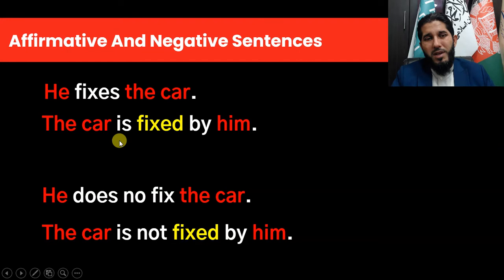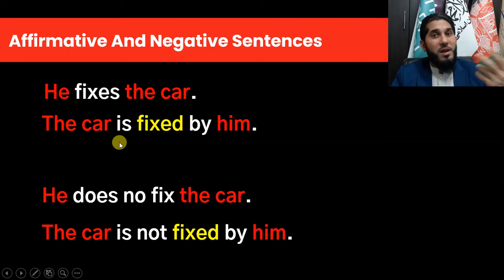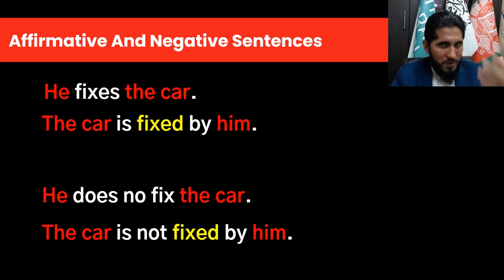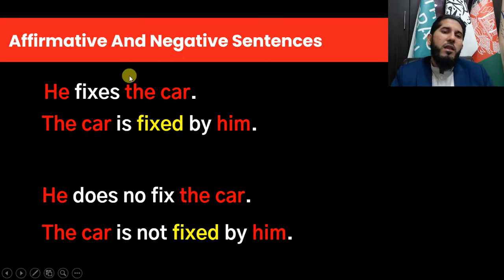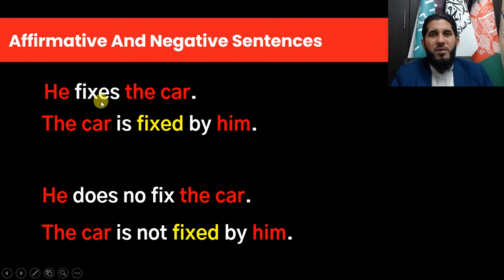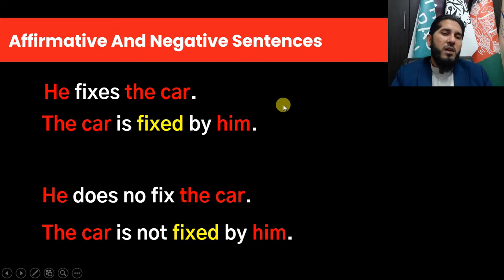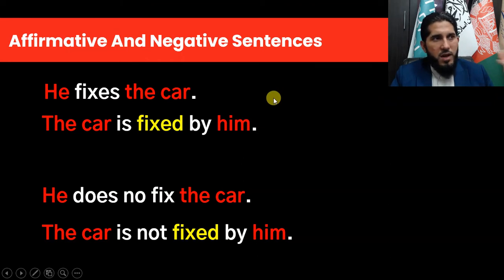There should be a to-be verb according to the tense and the subject of the sentence. Also, the main verb of the sentence should be an action verb, not a state verb. For example, 'I like you' and 'you are liked by me' — it's not common to change state verbs from active to passive. The main verb should be transitive, meaning it takes an object directly, like 'fixes the car.' If a verb does not take an object, it is intransitive and that kind of sentence cannot be changed from active to passive voice.